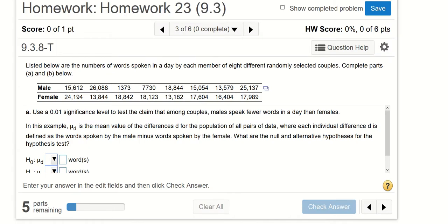Let's take this homework problem for example. It says listed below are the numbers of words spoken in a day by each member of eight different randomly selected couples. Here we have couples as pairs, on top is male, at the bottom is female. Use 0.01 significance level to test the claim that among couples males speak fewer words in a day than females.